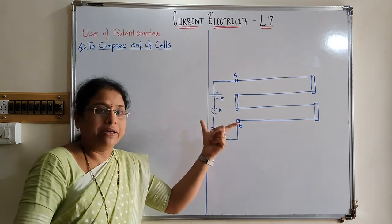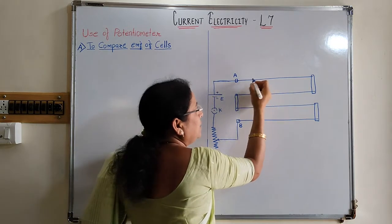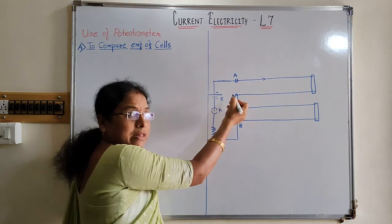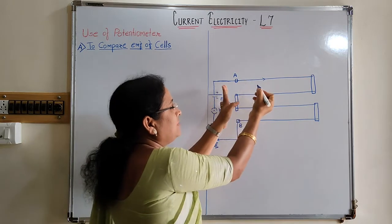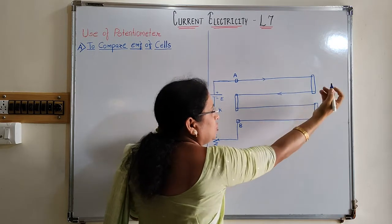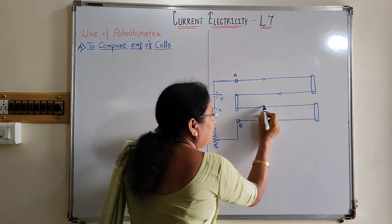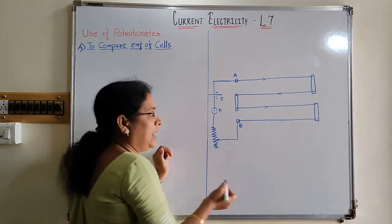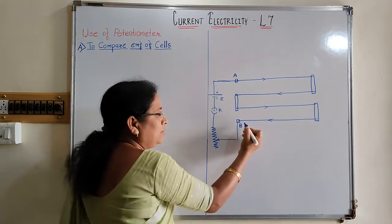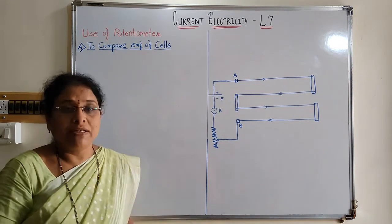When we close the key, the current from the positive terminal of the cell will flow from this point and enter the wire, going in this direction. In the first wire, the current goes from left side to right side. From the steel strip it enters the second wire, where the direction of current is from right to left. Again in the third wire, the current flows from left side to right side. And in the fourth wire, again the current flows from right to left, and comes back to the battery. This is the primary circuit of the potentiometer.